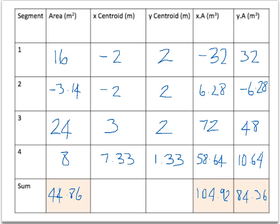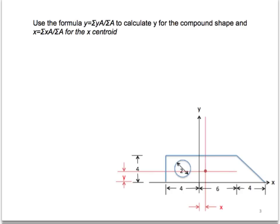So once this table is filled out, we're going to use these values in the shaded squares to calculate the X and Y centroid for the overall shape. So we're going to use the values from the previous slide here now. So our Y bar is going to be equal to the sum of YA all over the sum of A. And now these are the values which we filled in on the previous table. So this is going to be 84.36 all over 44.86.